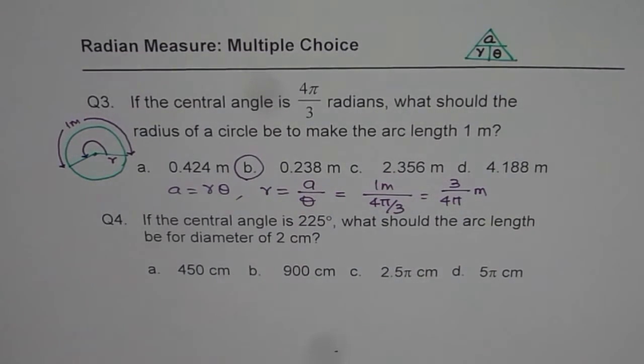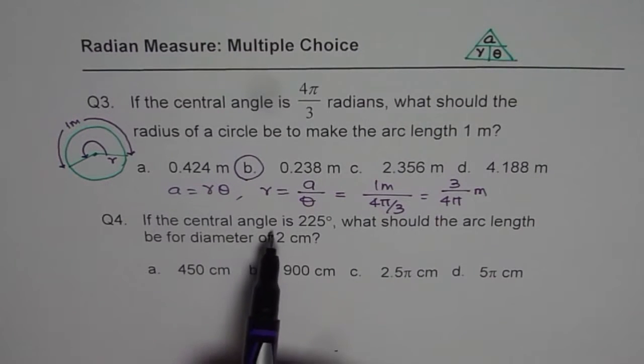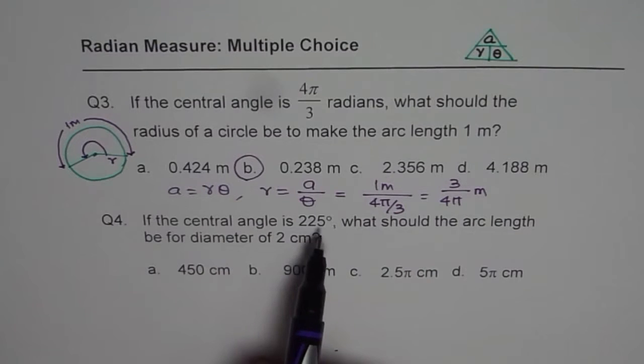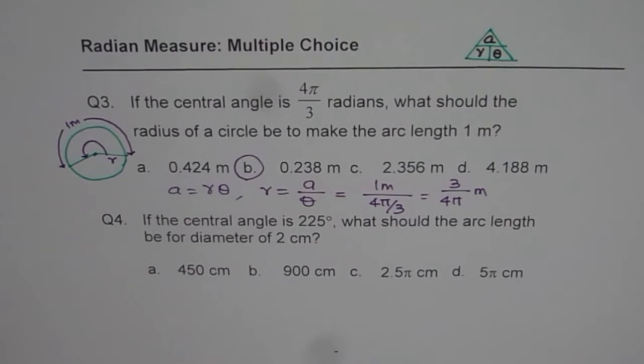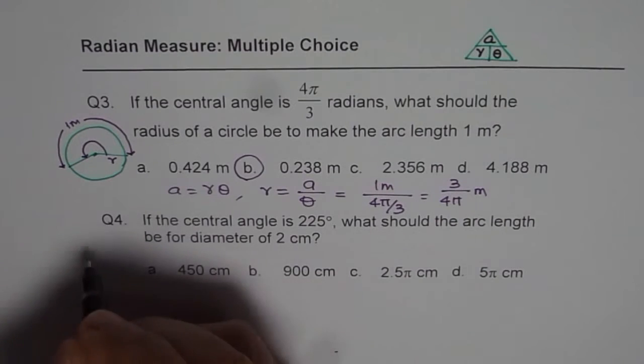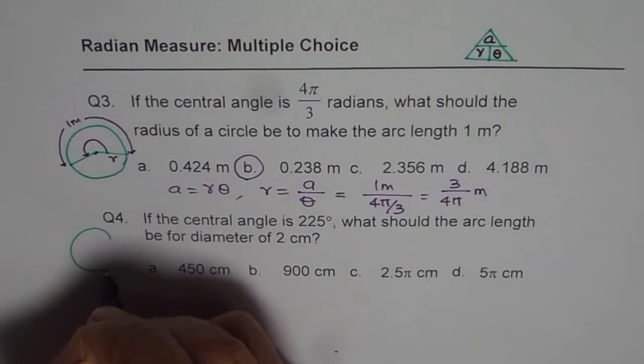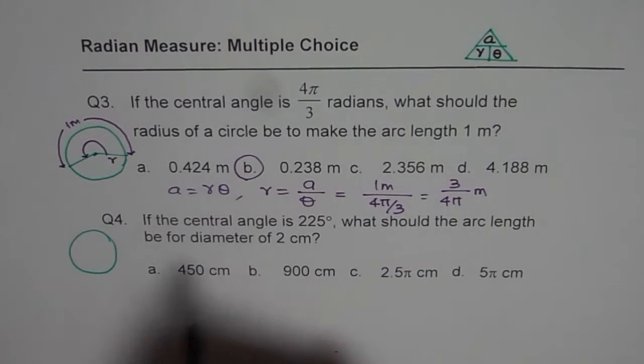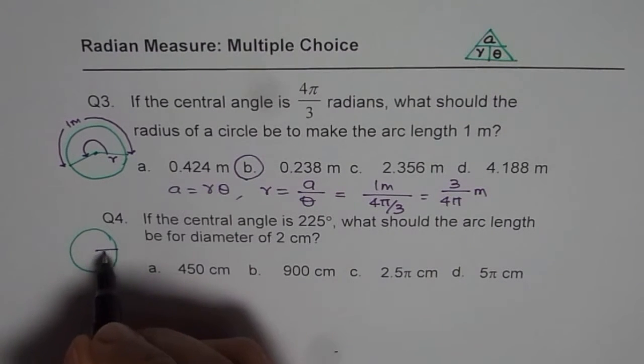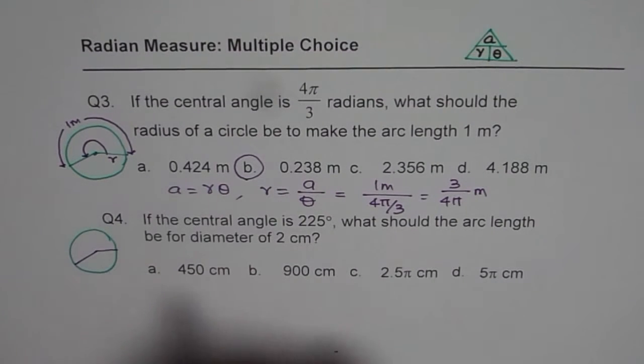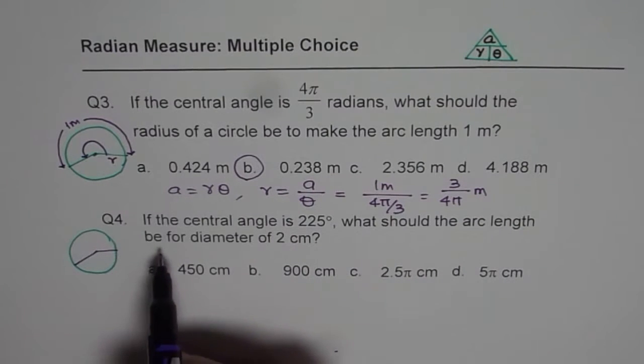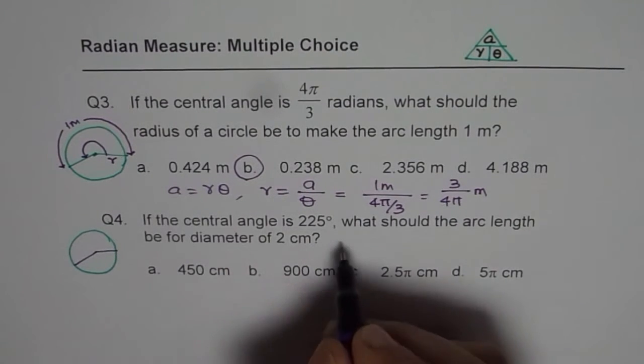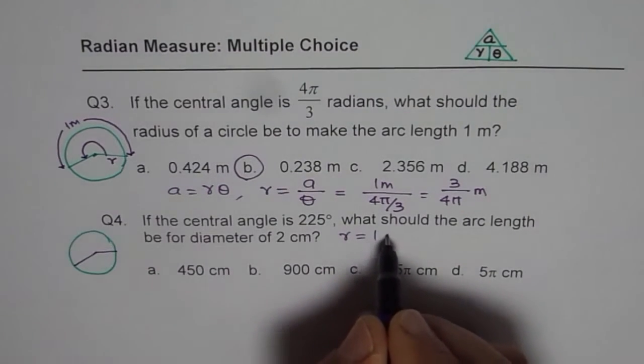So that is how you can get it. Now in the next question, what we have is the central angle is 225 degrees. It is a similar situation. So let me sketch this one also. Central angle is, so let us say consider a circle here again. Central angle is 225, which is more than 180.